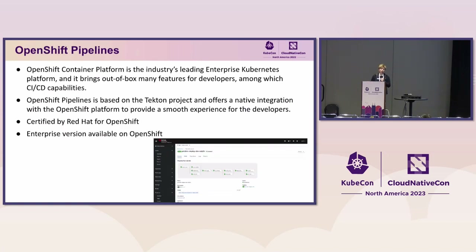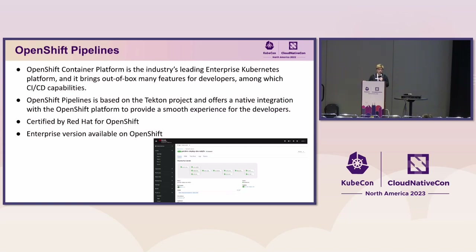Why do we want to use Tekton Pipeline to build our ML infrastructure? The main reason is that we need to build our ML infrastructure on top of OpenShift. OpenShift container platform is the industry-leading enterprise Kubernetes platform, which brings out-of-the-box features for developers including CI/CD. The CI/CD for OpenShift is OpenShift Pipelines, which is based on Tekton and offers native integrations with the OpenShift platform. OpenShift Pipelines is also certified by Red Hat and has enterprise versions available — that's why we chose it for running secure ML and AI pipelines.